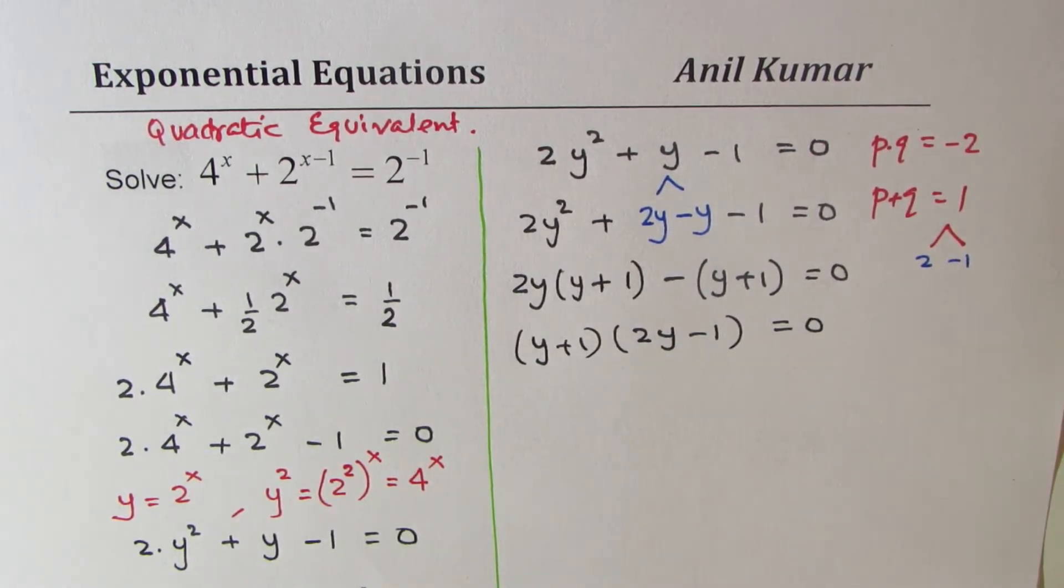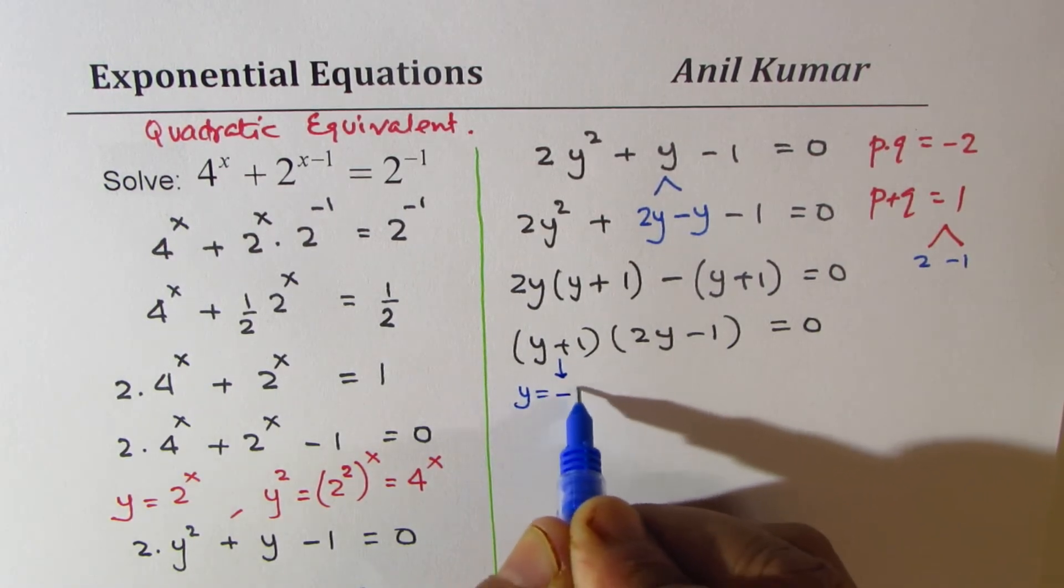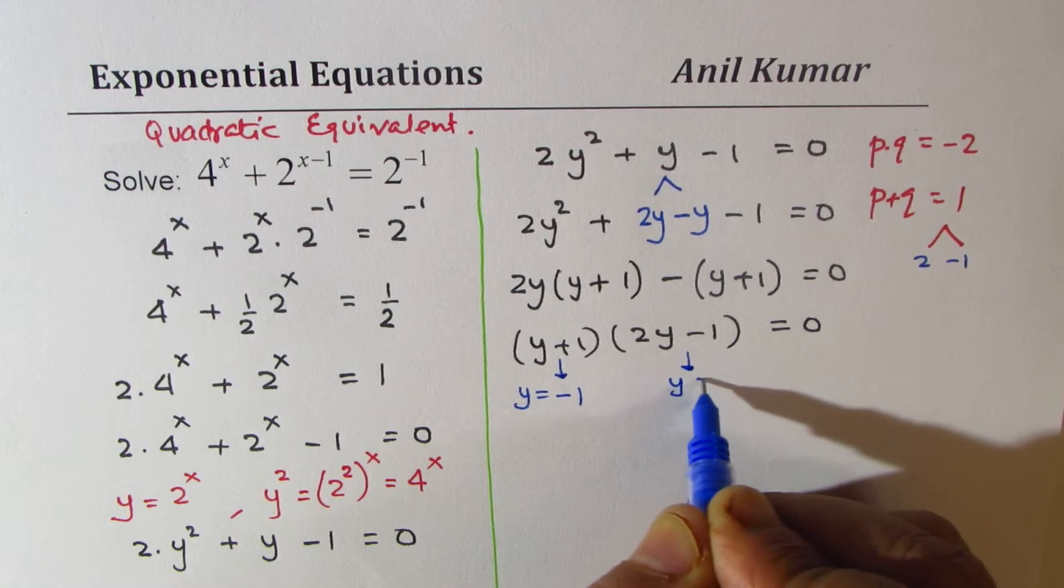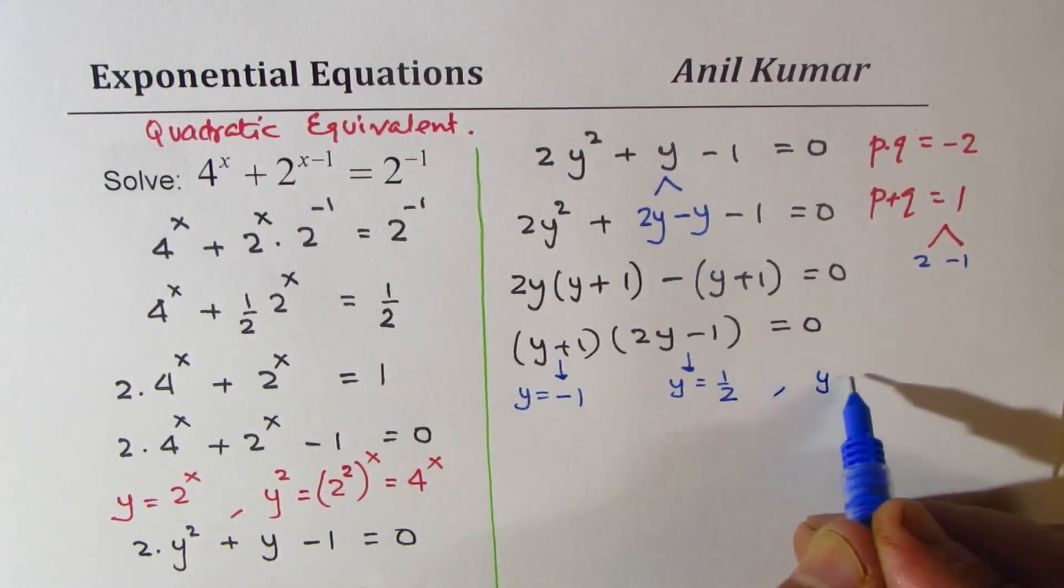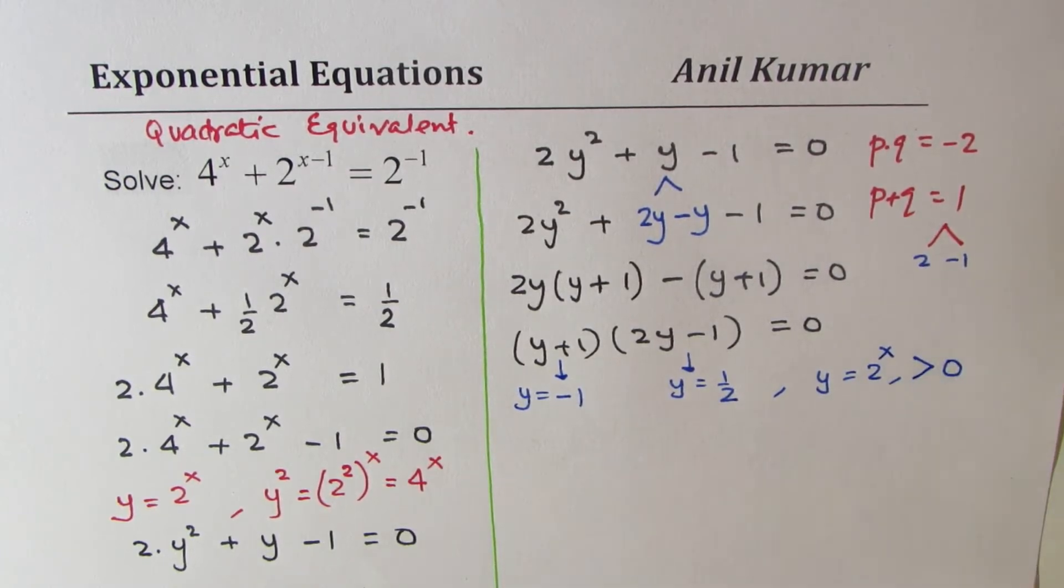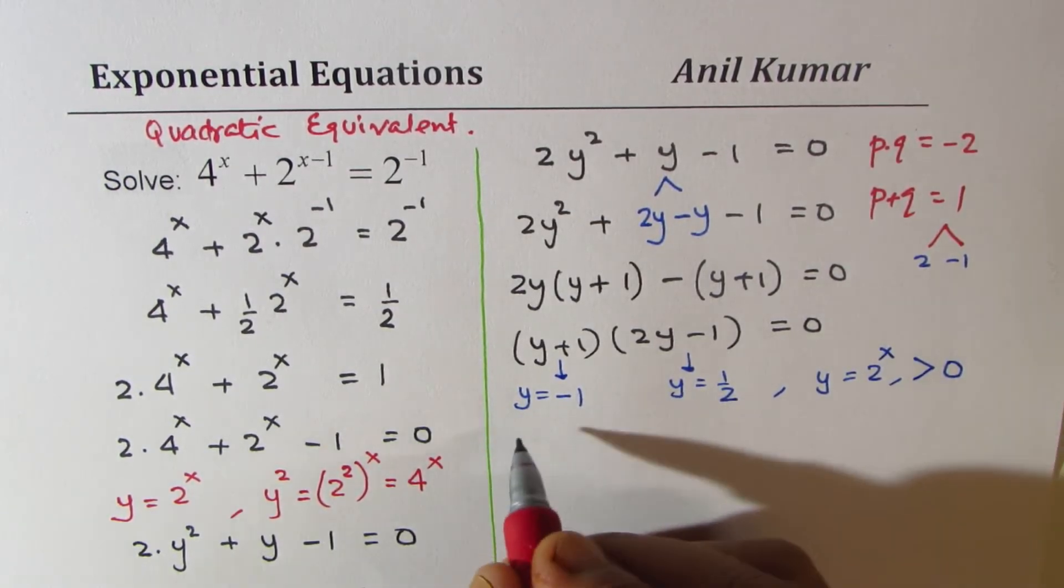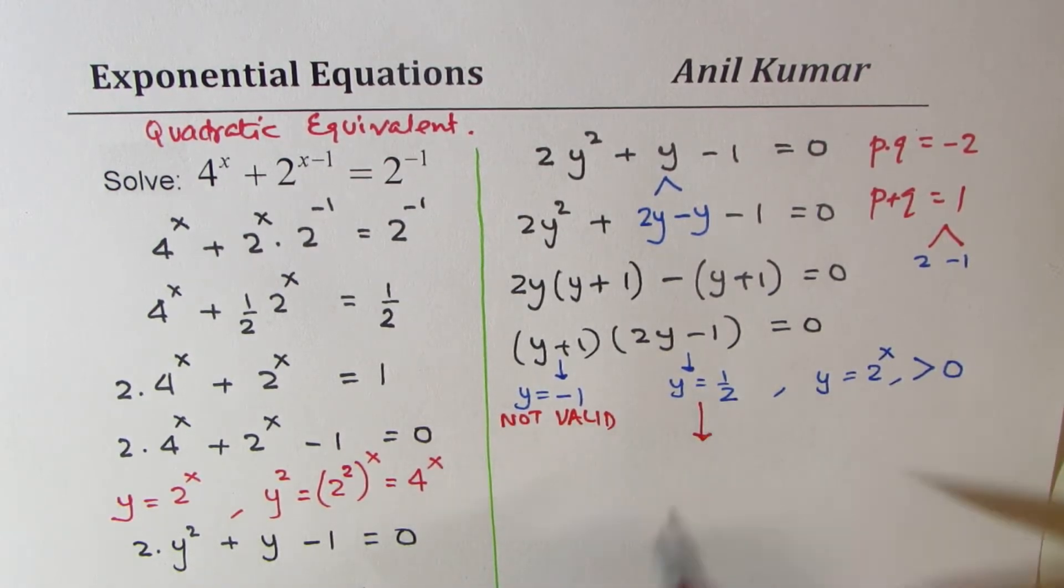Now, we have a quadratic equation in factored form where we can easily find the solution. That gives us y equals minus 1, and this gives us y equals half. But what is y? y is 2 to the power of x, which is always greater than 0. So minus 1 is not valid.